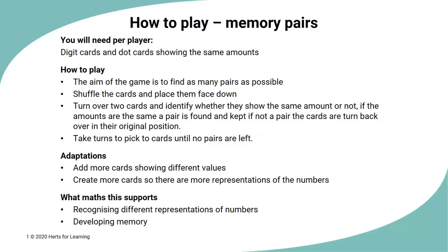Memory pairs. For this game you'll need a set of both digit cards and dot cards showing the same amounts. To play the game you pick some of the cards to make pairs and you spread them out. Don't forget that the array that we showed in the video can be really helpful as it helps the children remember where the cards are. Adaptations you could make: you could add more cards so there's a greater number of cards for the children to find pairs with or you could create some more cards. The maths this supports is it helps the children recognize different representations of the same value. So in this case in the video we have the numbers represented as digits and as dot patterns. It also supports with the development of memory.